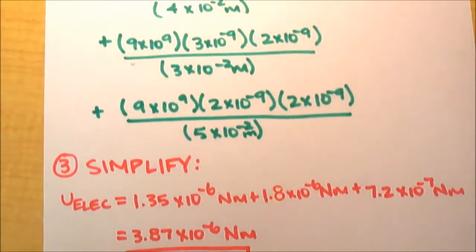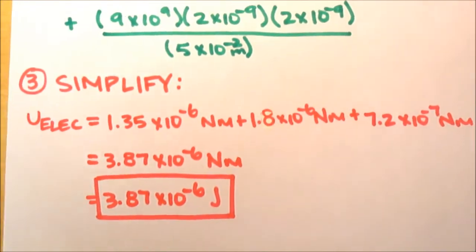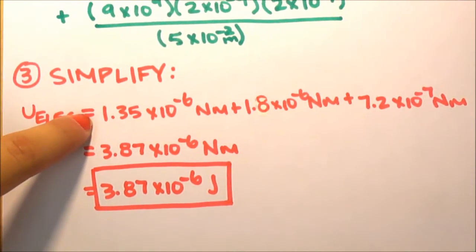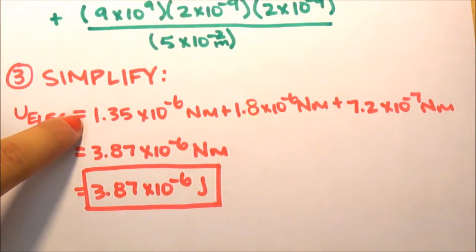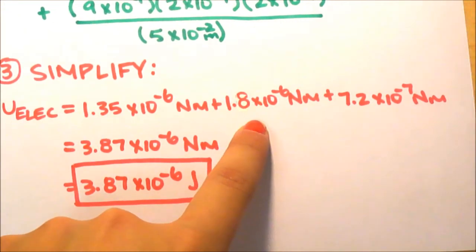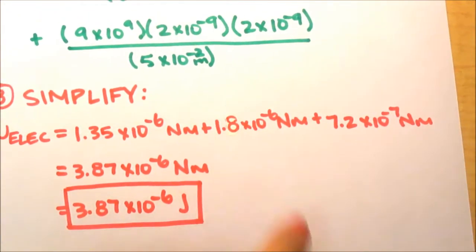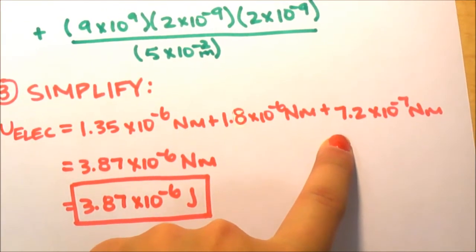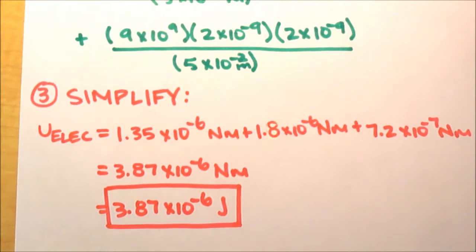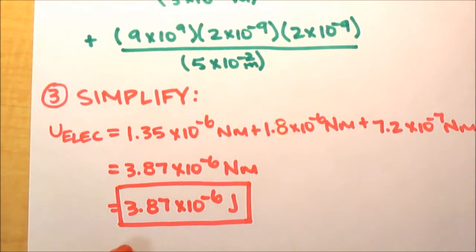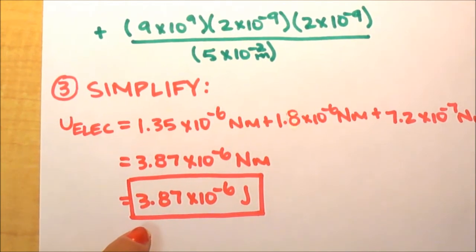Now when you simplify this equation, you should get the potential energy from charge one to charge two equals 1.35 times ten to the negative sixth newton meters. The potential energy from charge two to charge three is 1.8 times ten to the negative sixth newton meters. And the potential energy from charge three to charge one is 7.2 times ten to the negative seventh newton meters. When you add that all up, you should get 3.87 times ten to the negative sixth newton meters.